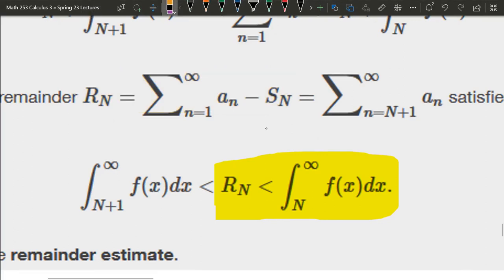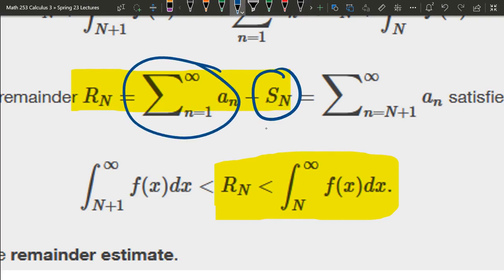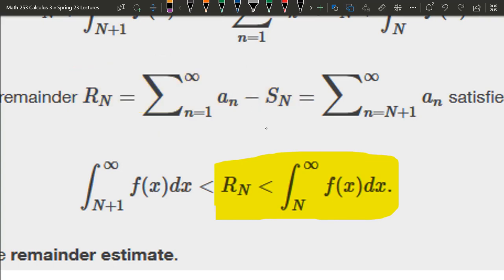So here's the partial sum of n terms, right there, how close is that going to be to the actual infinite sum? It's going to be rn close, and how do we compute rn?